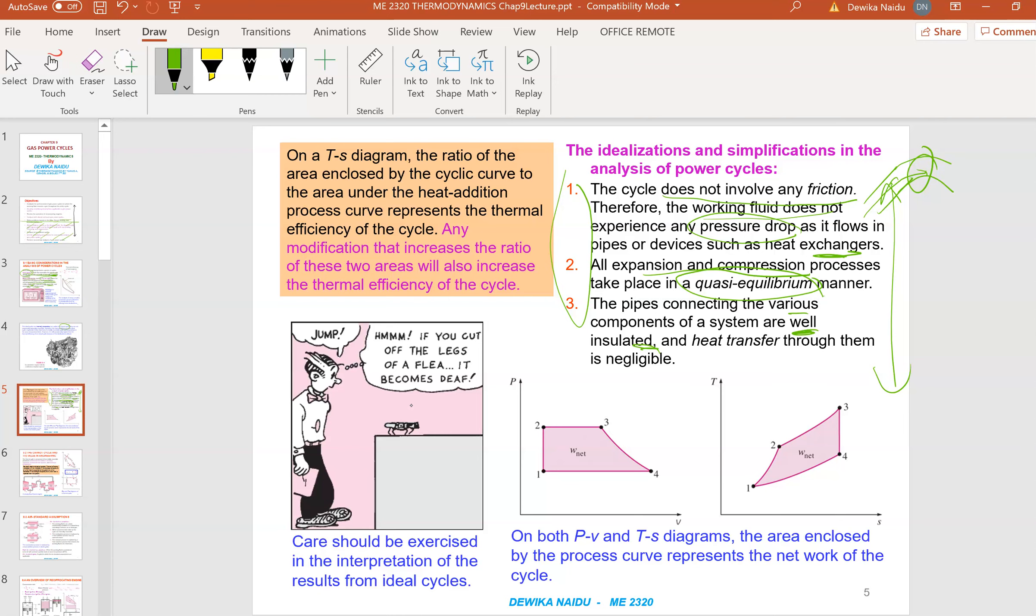On a TS diagram, the ratio of the area enclosed by the cyclic curve and the area under the heat addition process curve represents the thermal efficiency of the cycle. Any modification that increases the ratio of the two areas also increases the thermal efficiency. All this explanation is actually in the textbook page 487.